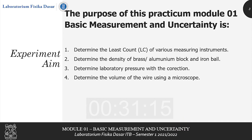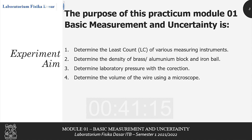The goals of this experiment are: 1. Determine the least count of various measuring instruments. 2. Determine the density of brass, aluminium block, and iron ball. 3. Determine laboratory pressure with the correction. 4. Determine the volume of the wire using a microscope.